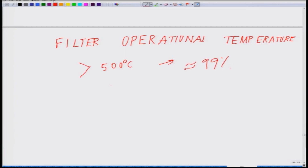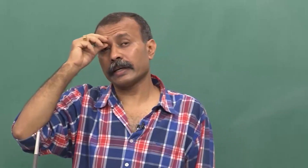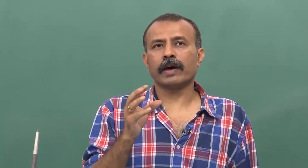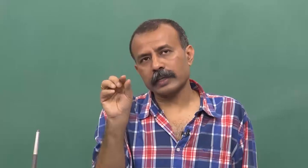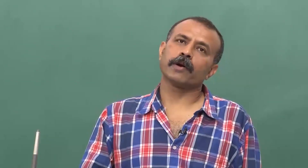If filter operational temperature is more than 500 degrees centigrade, you get higher efficiency of approximately 99 percent. But if it is lower than this, you land up with the next problem, which is tar condensation. If you reduce the temperature, all those big molecules which failed to crack accumulate at that lower temperature and form a kind of sludge or sticky stuff that sticks on to the walls.